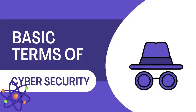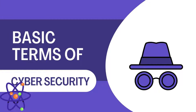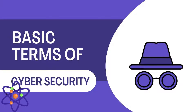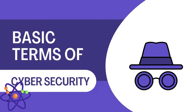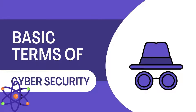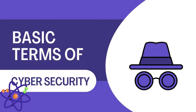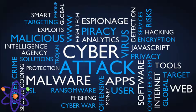Now let's discuss the basics of cyber security. Cyber security involves several fundamental terminologies and concepts essential for protecting the digital environment. Threats refer to potential dangers that can exploit vulnerabilities to cause harm to a system or data. Vulnerabilities are weaknesses or flaws in a system that can be exploited to gain unauthorized access. Risk is the potential for loss or damage when a threat exploits a vulnerability. Malware, short for malicious software, includes viruses, worms, trojans and ransomware designed to harm or exploit devices, networks or services. Phishing involves tricking individuals into providing sensitive information, typically through deceptive emails or websites.